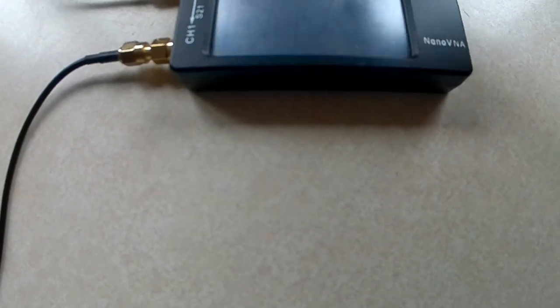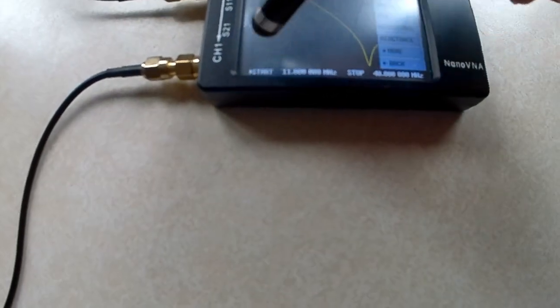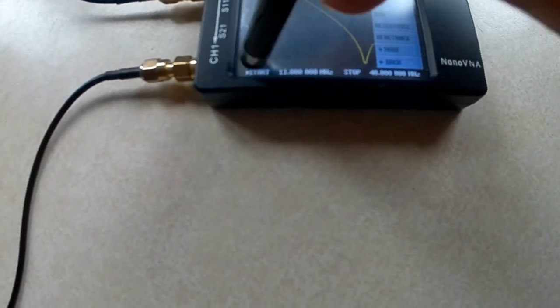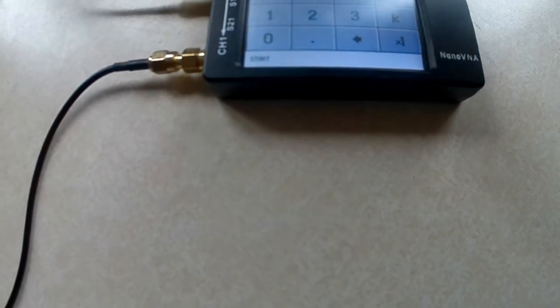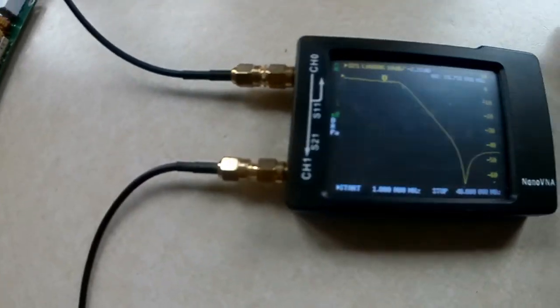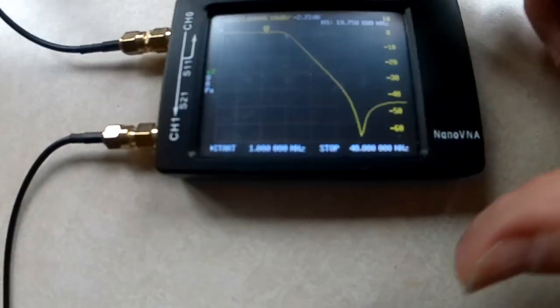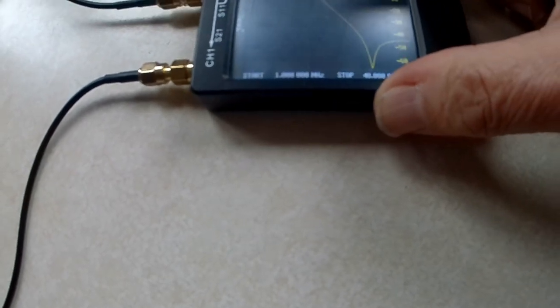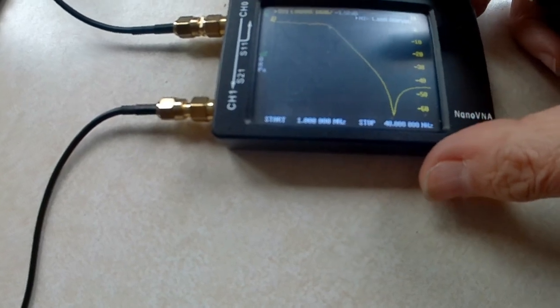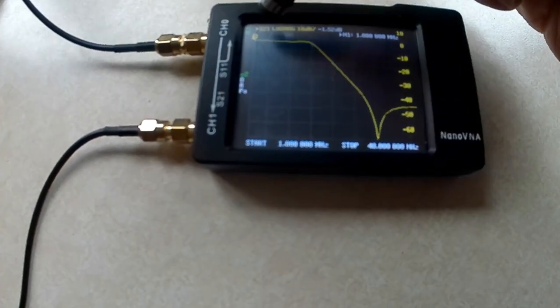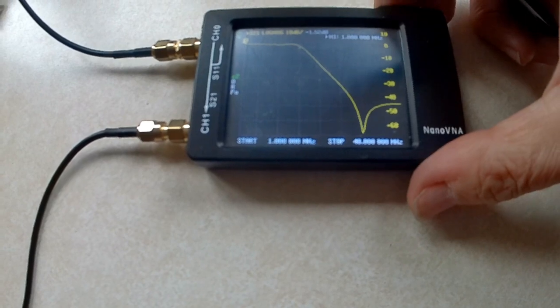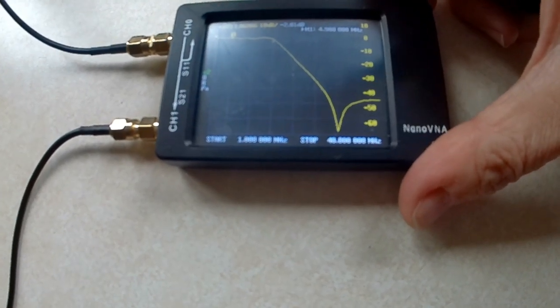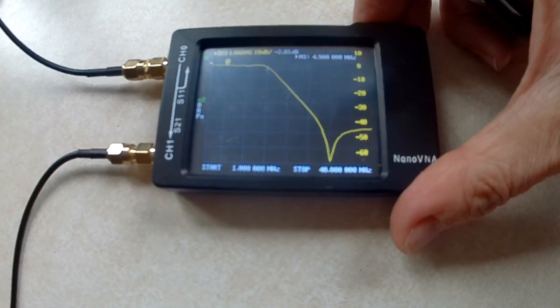If I go to 1 meg, which is right over here, that's minus 1.5 dB. Move along to 4.9 meg, minus 2 dB.